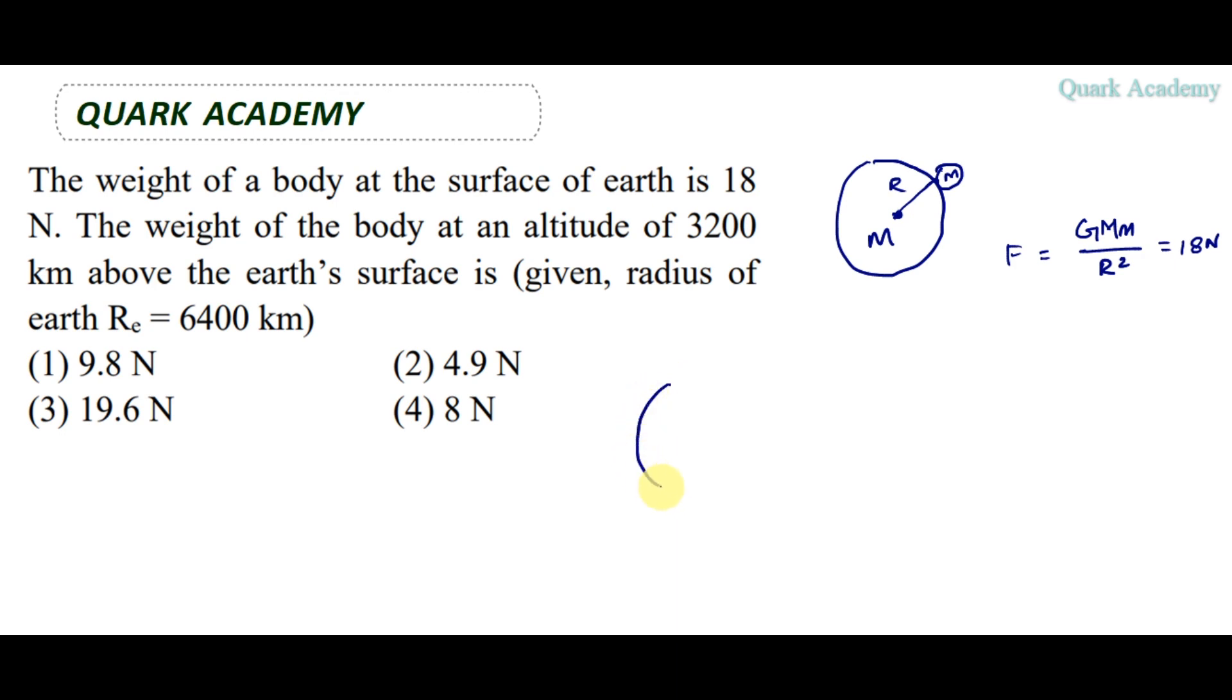Second case, it is mass M, radius R. This surface is H distance. This is 3,200 km above Earth surface. In this case, this is the object.